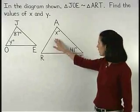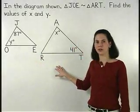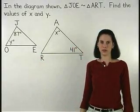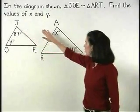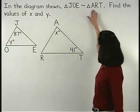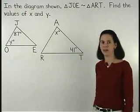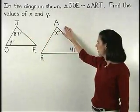To find the value of X, remember that if two triangles are similar, then corresponding angles are congruent. Therefore, since angle J corresponds to angle A, because each letter is mentioned first in our similarity statement, then we know that angle J is congruent to angle A.